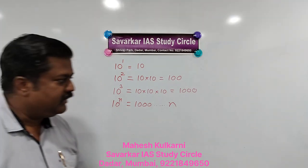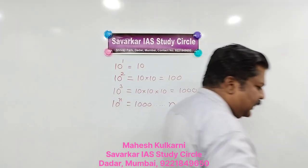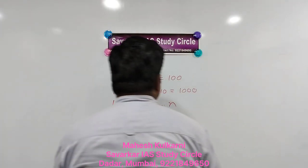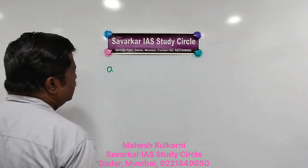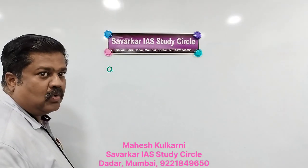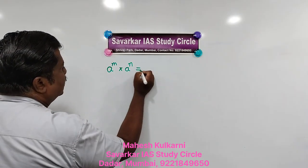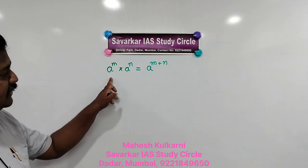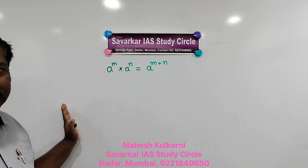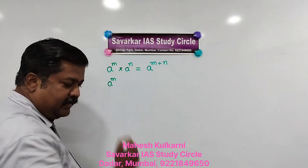Now the second part: laws of indices. For that purpose, consider A as a number which is not 0. Then A raised to M multiplied by A raised to N equals A raised to M plus N — provided A, M, and N must not be 0. Let me clarify this: 10 raised to 2 multiplied by 10 raised to 3 — same base A — gives 10 raised to 2 plus 3, which equals 10 raised to 5.